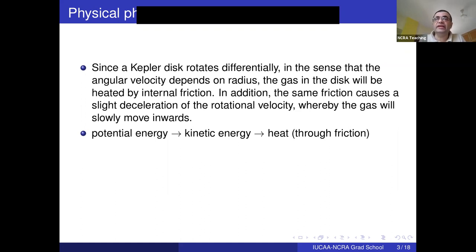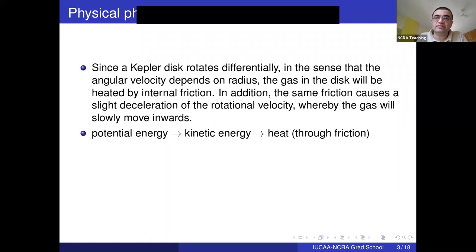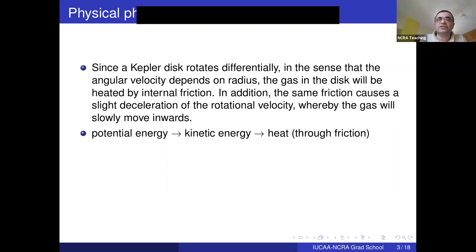Once the gas begins to get heated, the conversion from potential to kinetic energy is not total — not all of the potential energy lost manifests as kinetic energy; some manifests as heat. When that happens, the kinetic energy is not enough to keep the gas in a stable orbit, so there is a deceleration causing the gas to slowly move inwards in a spiral motion. What is essentially happening is a conversion of potential energy to kinetic energy, then a conversion of some kinetic energy into internal energy through friction.